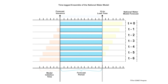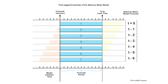For example, a forecast from three hours ago would use the 4th through the 15th hours to cover the same period of interest. In total, seven ensemble members are used to generate probabilities for the 12-hour forecast period.